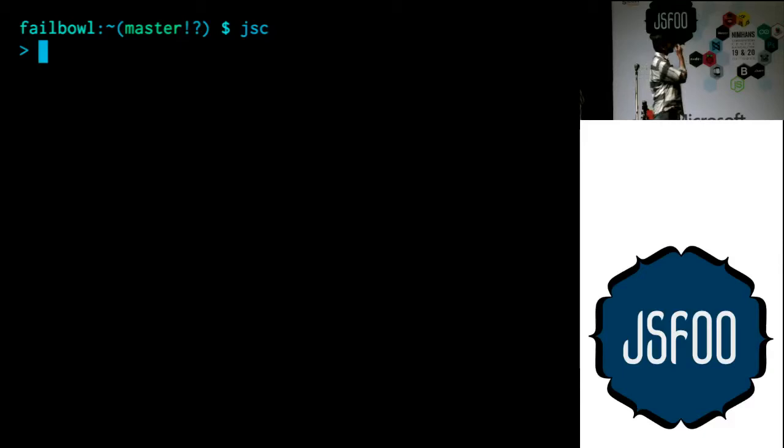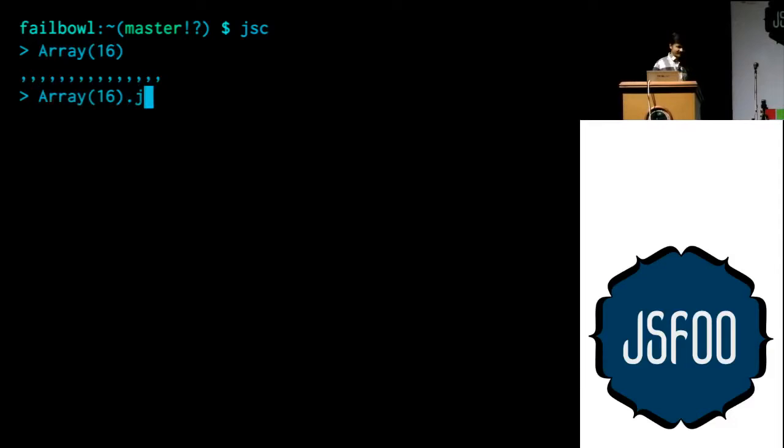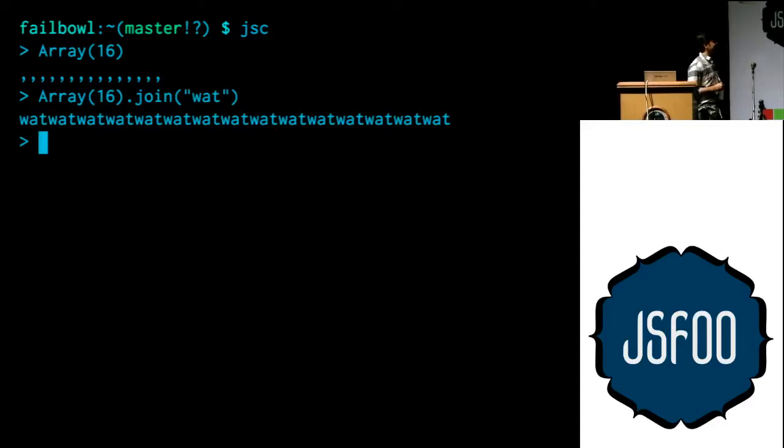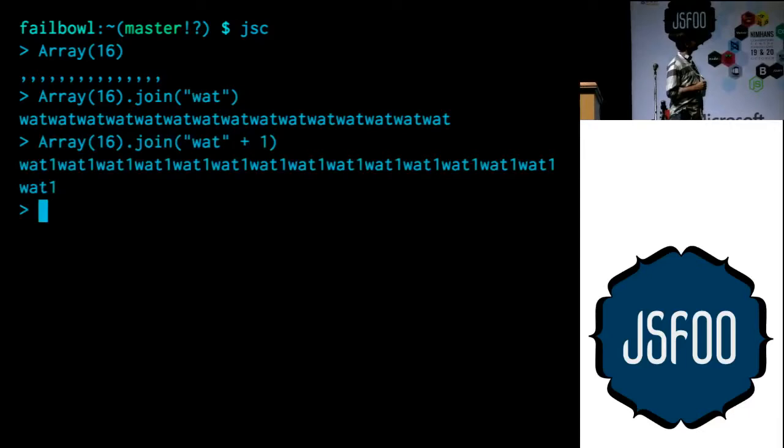If I say Array(16), or just array 16, I get an array of 16 things, which it represents as 16 commas — which is obvious. And if I then join those with a string, I get that string 16 times. This is actually the only line in this entire presentation that's reasonable. Now if I take that string and add a one to it, it casts the one to a string, and we get '1' a bunch of times. Fine.